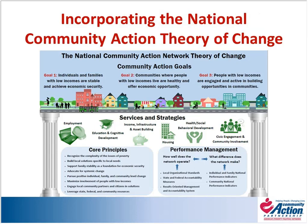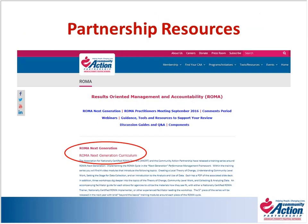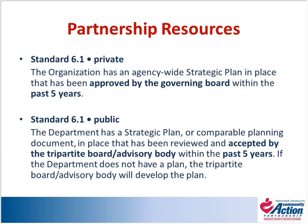The graphic on screen is the national theory of change for the community action network, laying out national goals, services and strategies, core principles, and performance management. On the Partnership website under the Tools and Resources tab, we have a series of guides for ROMA trainers, including one on creating a local agency theory of change. These are designed for ROMA trainers and implementers to facilitate training at your agency and walk you through the process of developing that local theory of change.